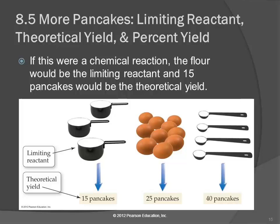Do things sometimes go wrong when you're making pancakes? Yeah. If you're trying to get fancy and flip them in the air, they could fall on the floor. Or you could get distracted by the telephone and leave them on the pan and they burn. So you don't always make fifteen pancakes, even though the recipe says you could. That's the theoretical yield.